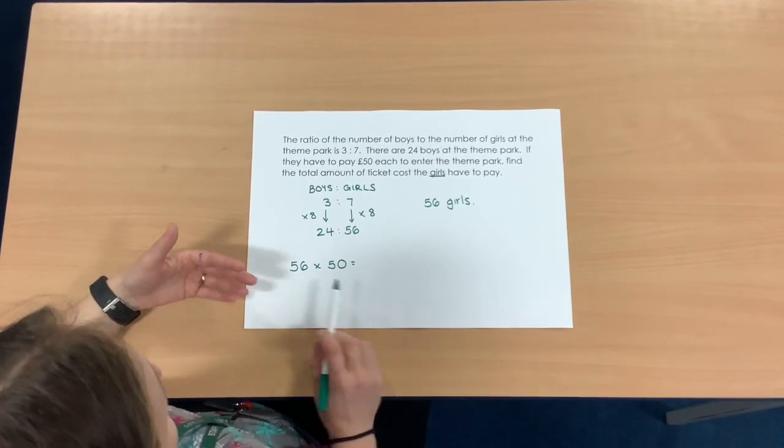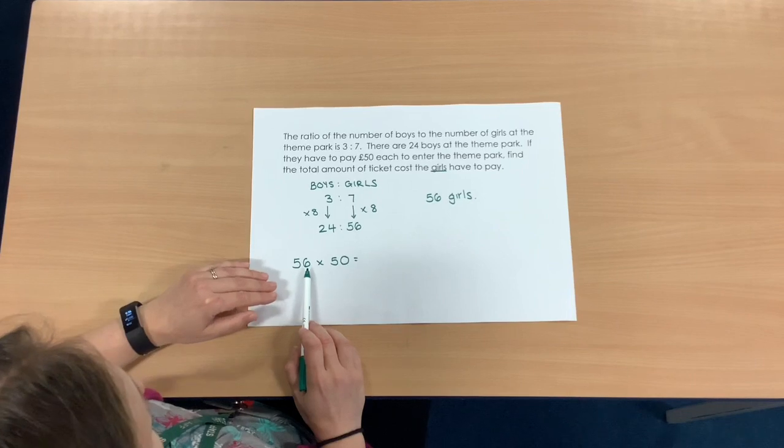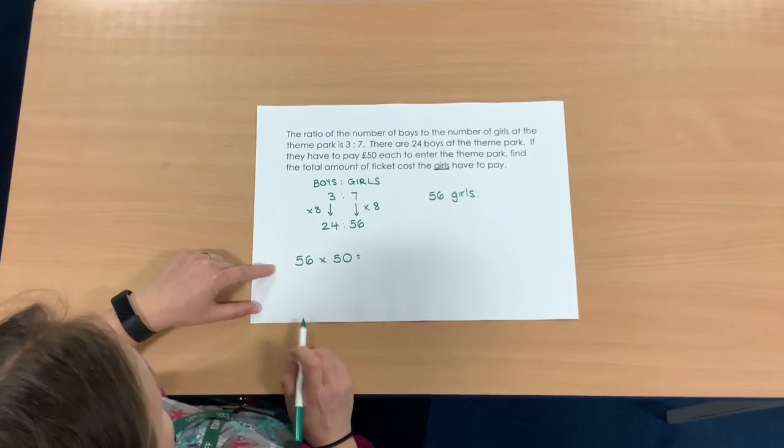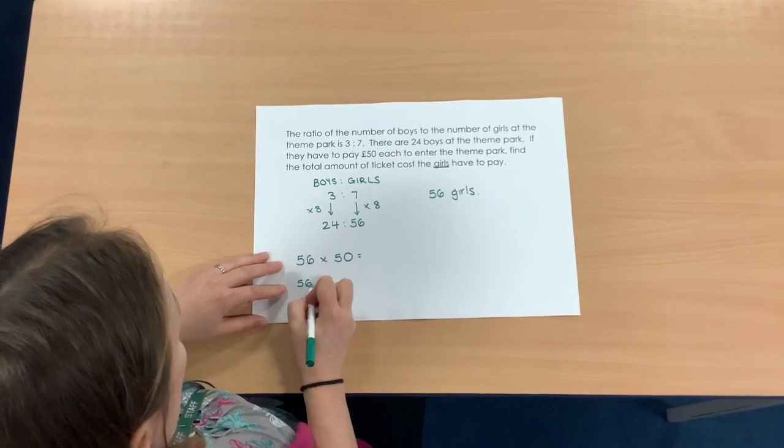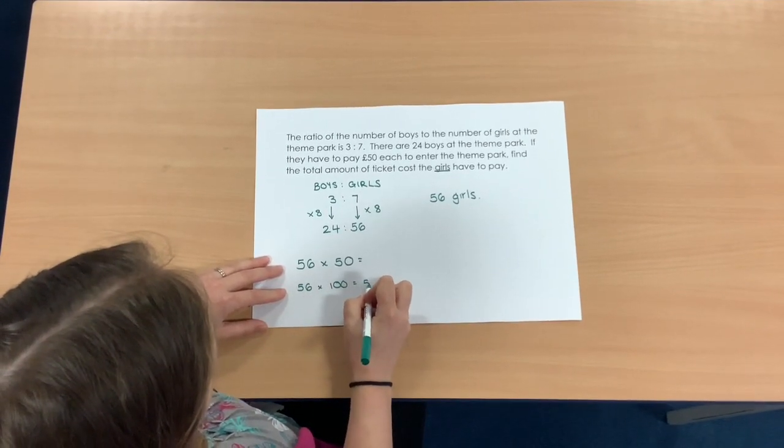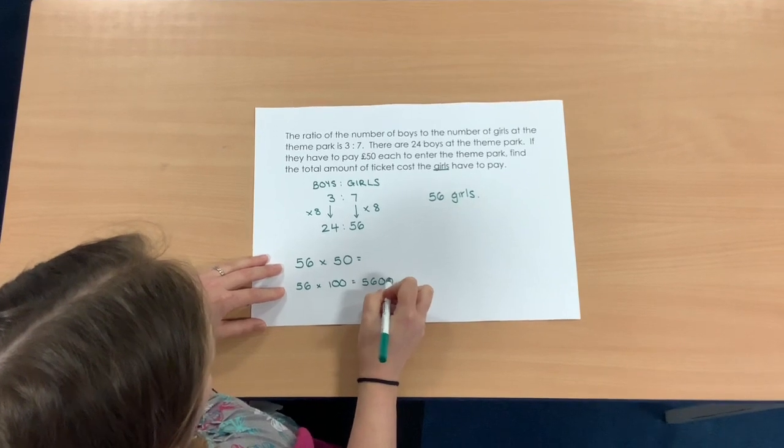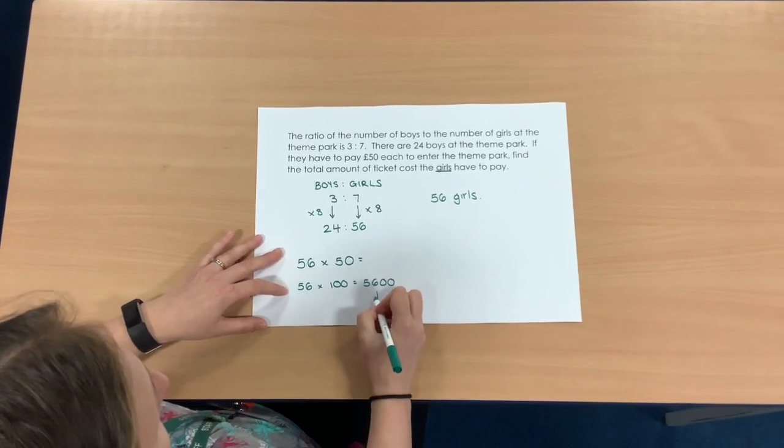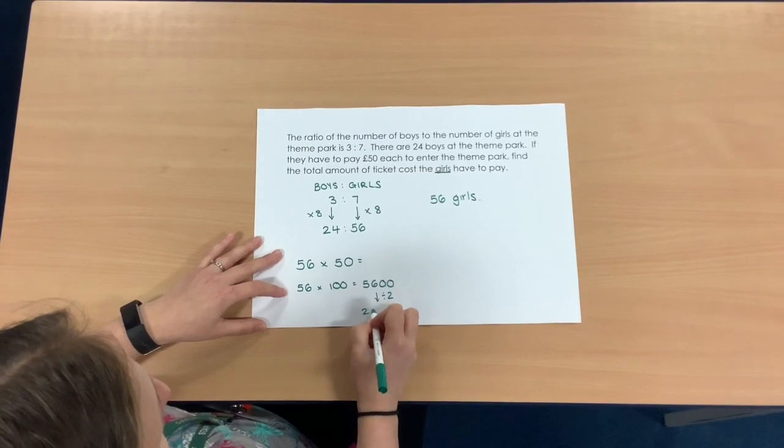I'm going to do it both ways to show you. So 56 times 100, well we know when we times by 100 the digits move two places to the left. So 56 times 100 is 5,600, and then half of 5,600 is 2,800.